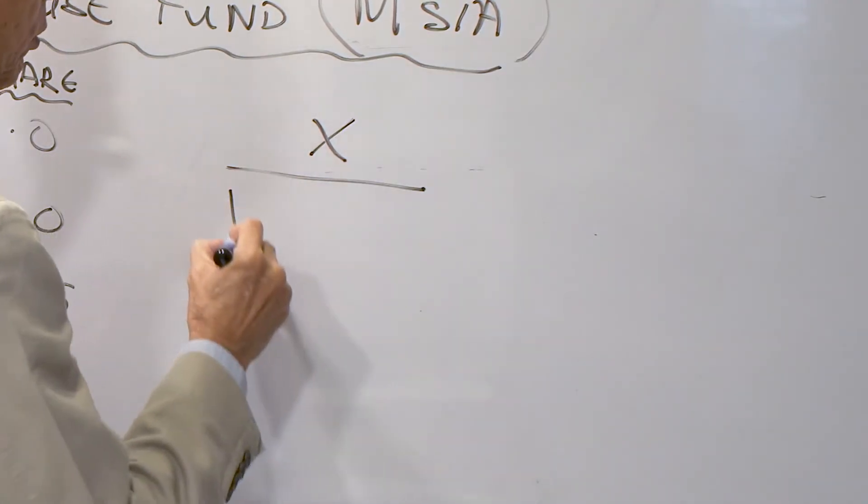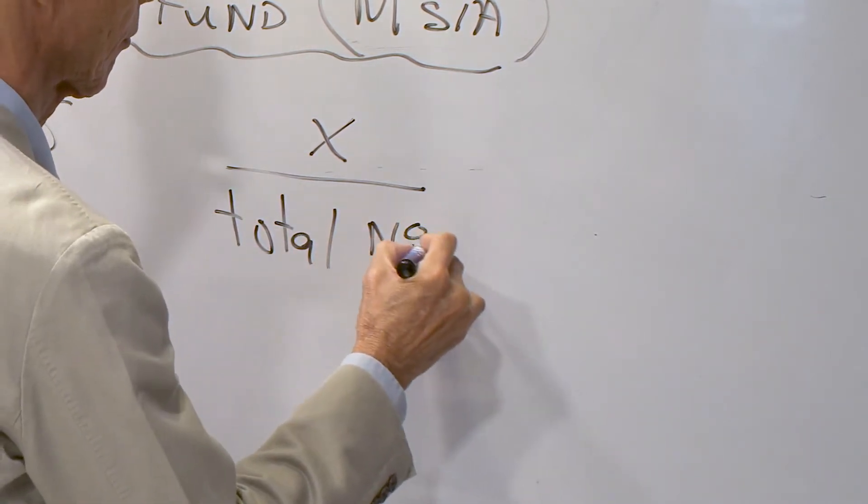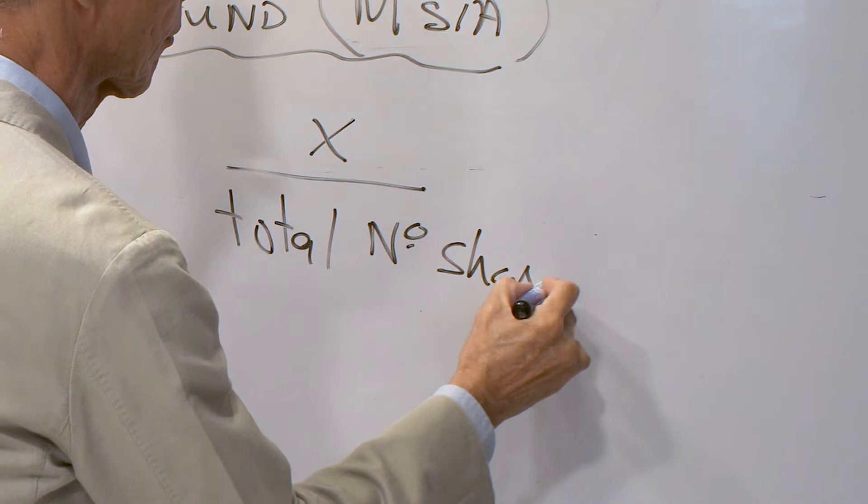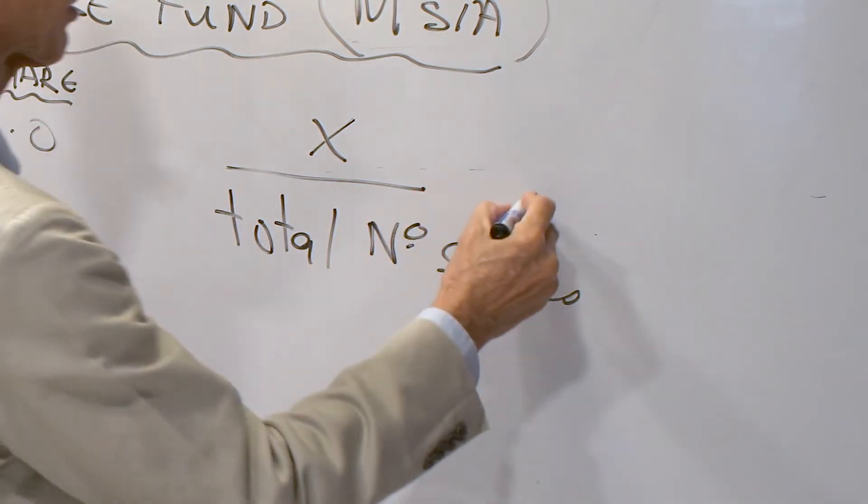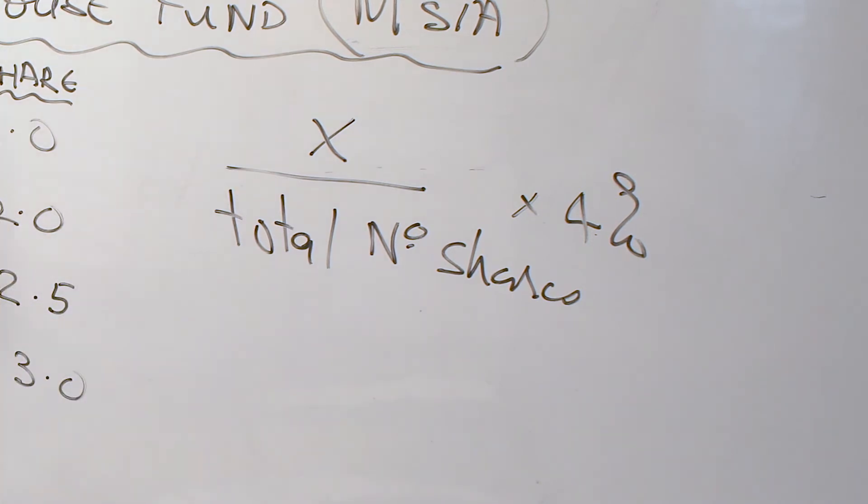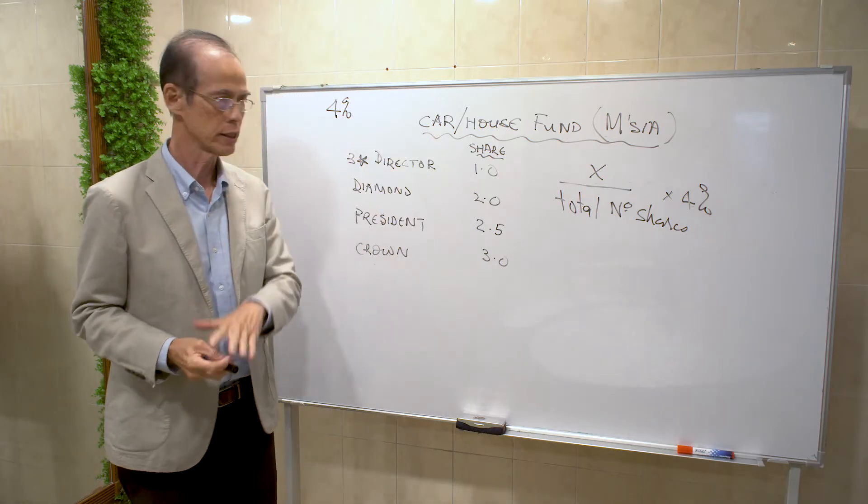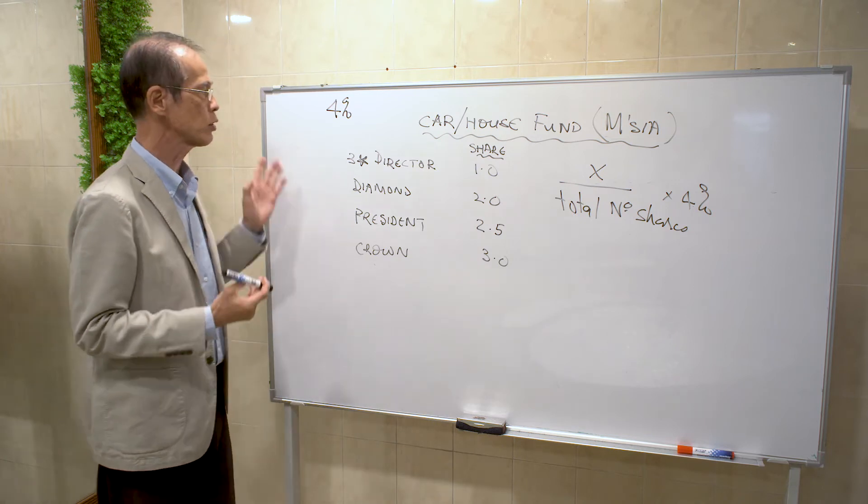Over the total number of shares times the 4%, that is what you will get for the car and house fund. It is very straightforward, so quickly become a three-star director to enjoy an additional income for yourself.